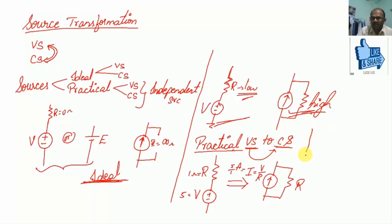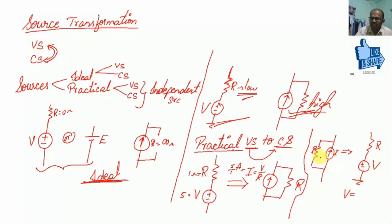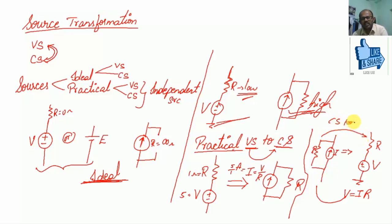To convert a practical current source to a voltage source, the resistance remains the same — still R — and the voltage is V equals I times R. These inter-conversions are very important. You will be getting three to four problems to become familiar with voltage-source-to-current-source conversion and current-source-to-voltage-source conversion.